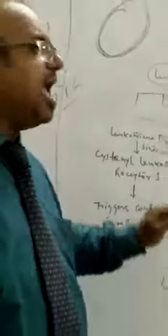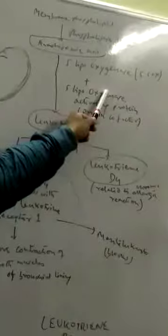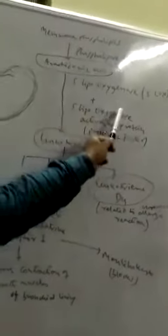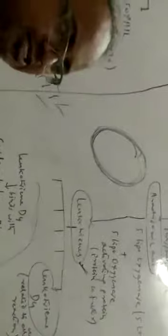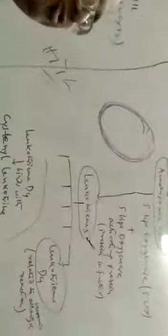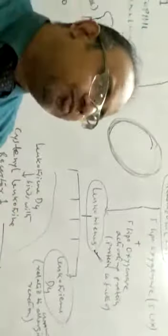The arachidonic acid then undergoes a reaction via 5-lipoxygenase. 5-lipoxygenase is activated by a protein cofactor. This enzyme converts arachidonic acid, and the resulting reaction produces leukotrienes. This leukotriene pathway is the basis of the chronic allergic reaction.